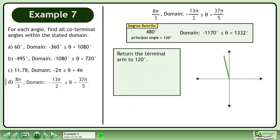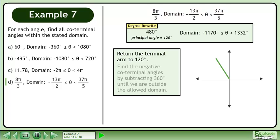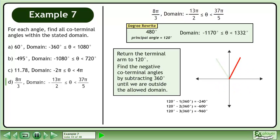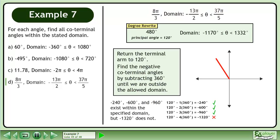Return the terminal arm to 120 degrees. Find the negative coterminal angles by subtracting 360 degrees until we are outside the allowed domain. Negative 240 degrees, negative 600 degrees, and negative 960 degrees exist within the specified domain, but negative 1320 degrees does not.